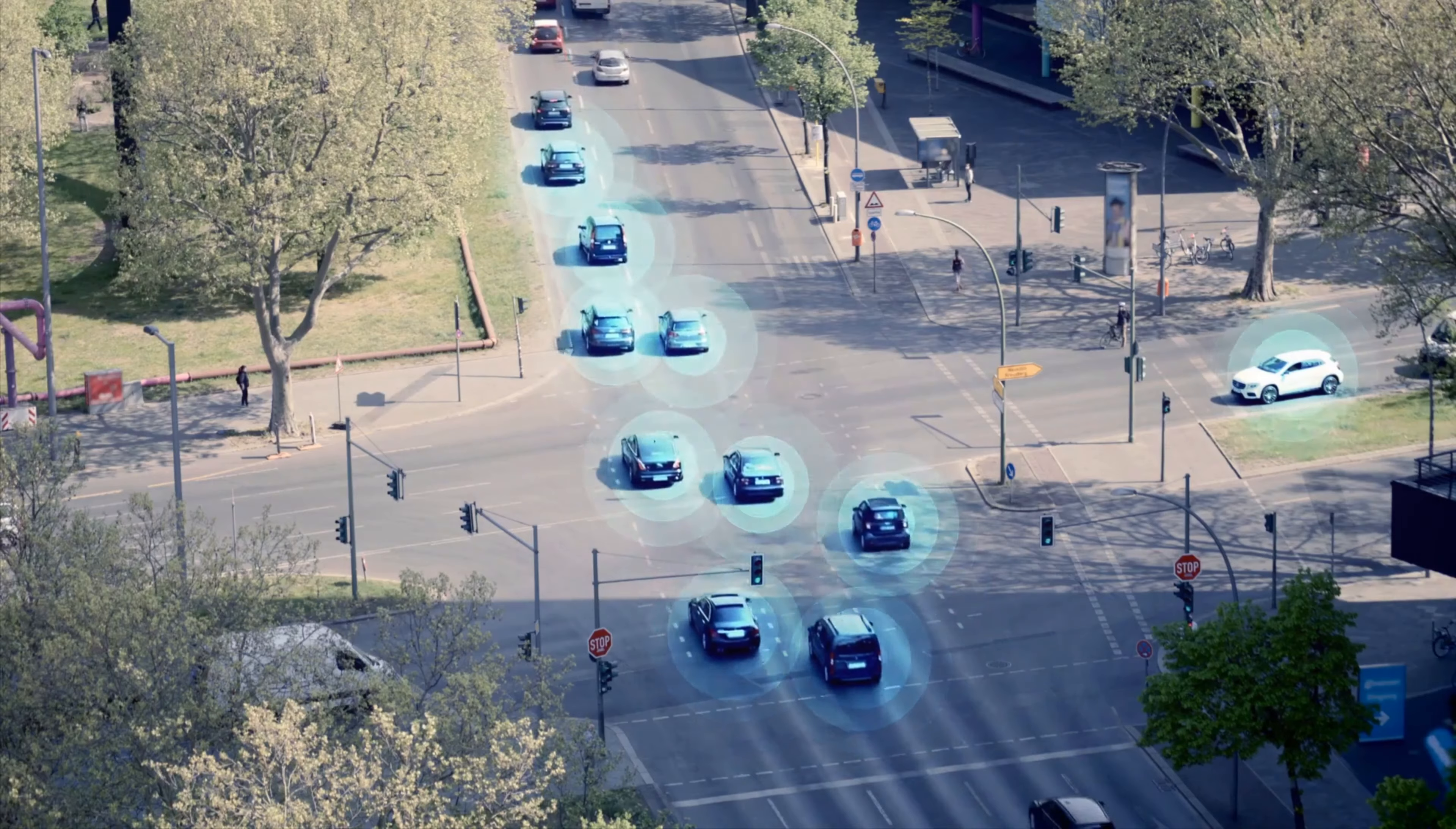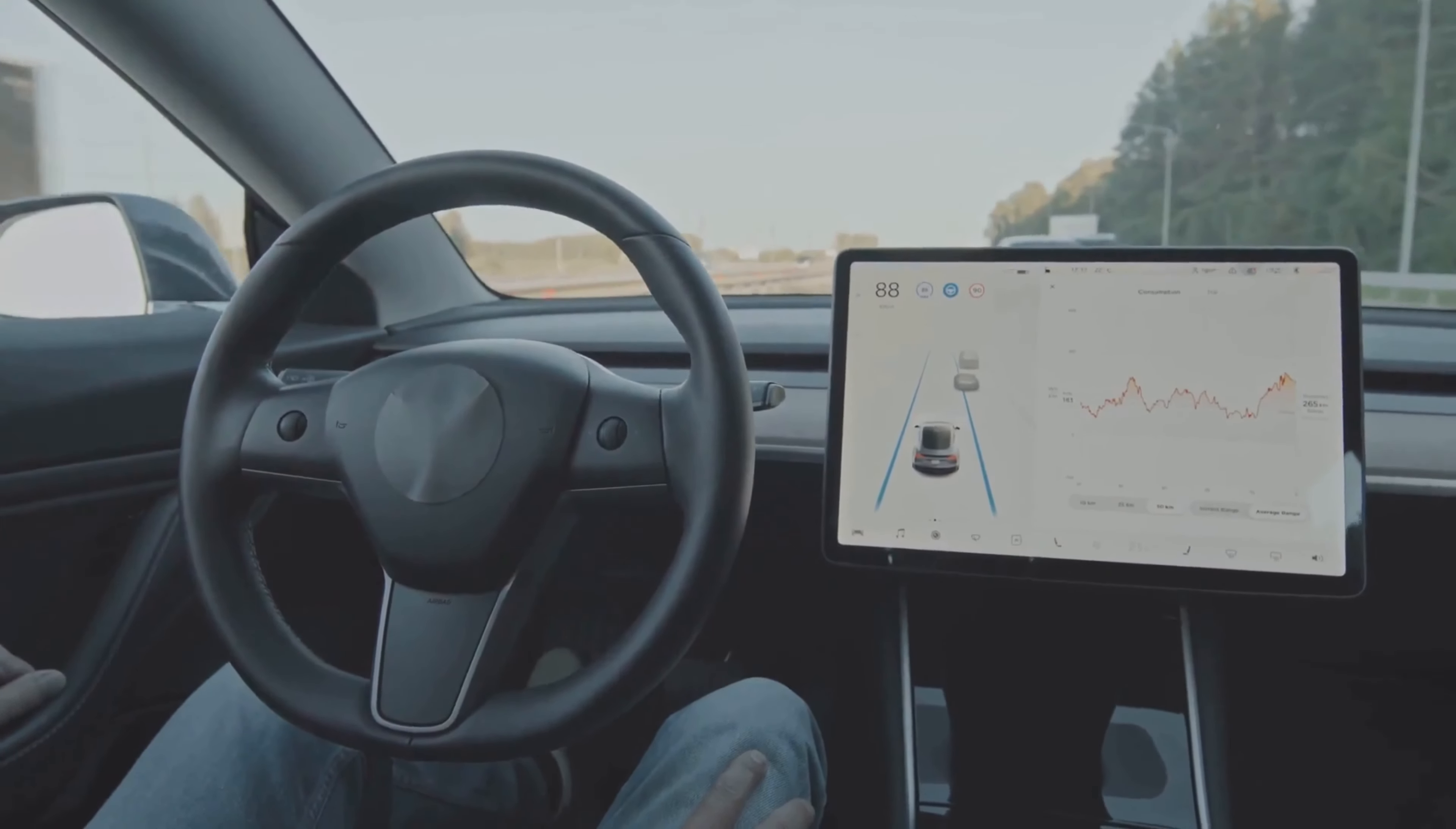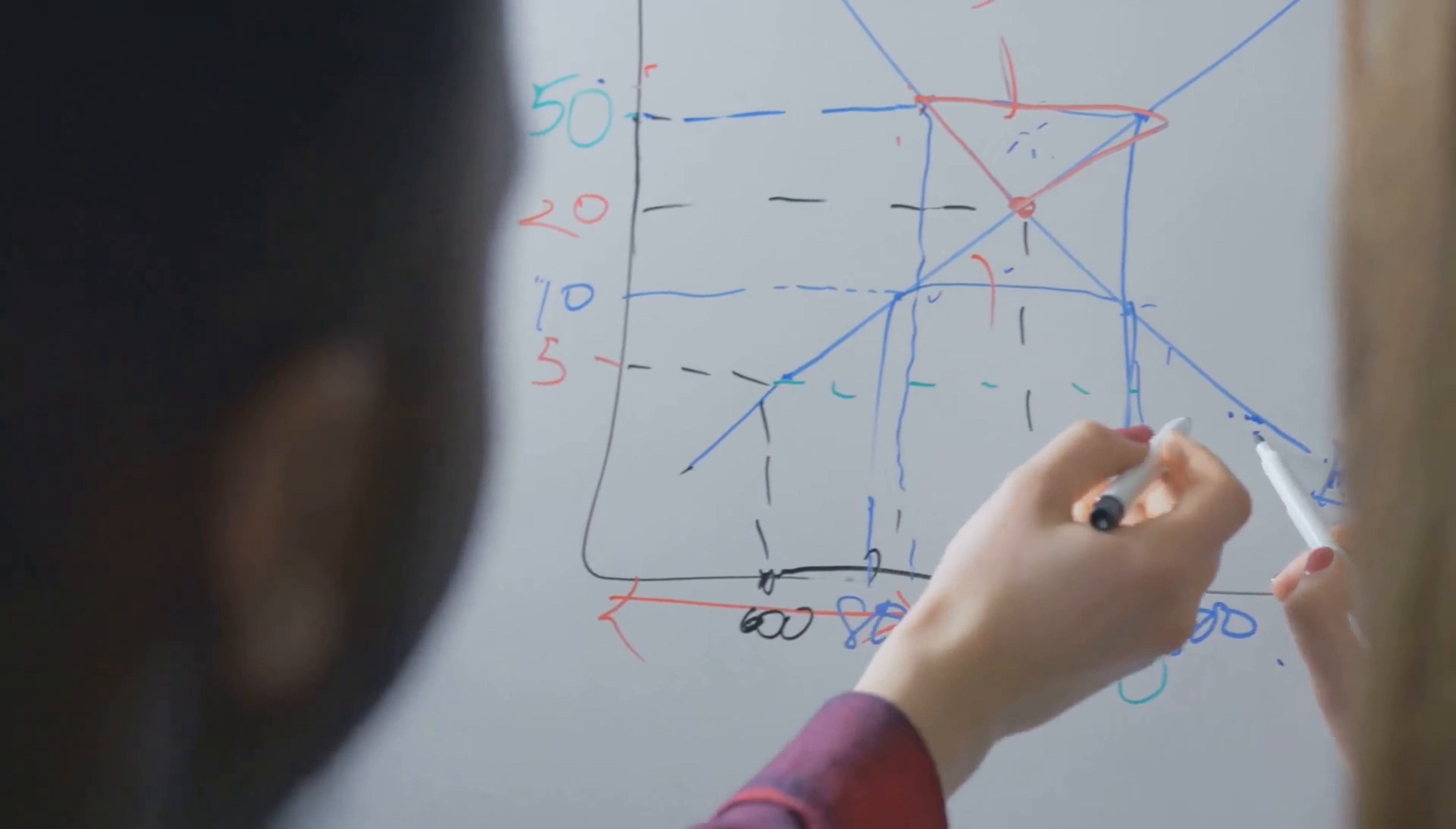Now, let's switch lanes, quite literally, to the realm of autonomous vehicles. Here, deep learning takes the driver's seat, powering the brains behind self-driving cars. It's not just about staying in the lines on a highway. Deep learning algorithms can recognize pedestrians, understand traffic signals, and even predict the behavior of other drivers.